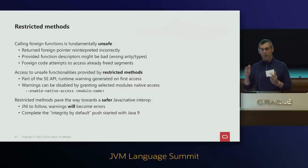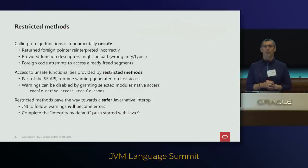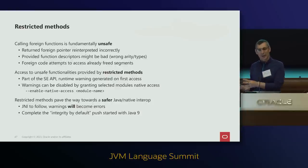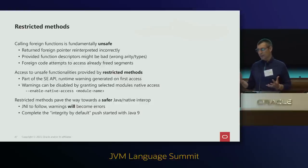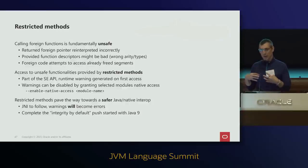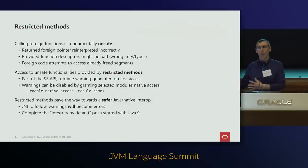This is the first step toward a safer Java native interop. JNI is likely going to follow, and the first step will probably restrict System.loadLibrary. This completes the integrity-by-default push that started with Java 9 and strong encapsulation. Native code was still an issue because it could crash applications in unexpected ways. Restricted methods allow us to model exactly where an application is going to be unsafe, and let developers choose whether they want that.